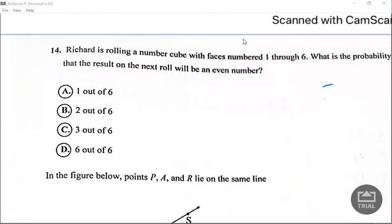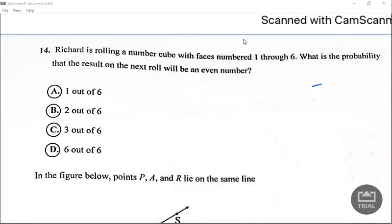Richard is rolling a number cube with faces numbered 1 through 6. What is the probability that the result on the next roll will be an even number? So let us talk about the numbers on the cube. We are from 1 to 6, so we have a total of 6 numbers, that's the denominator.